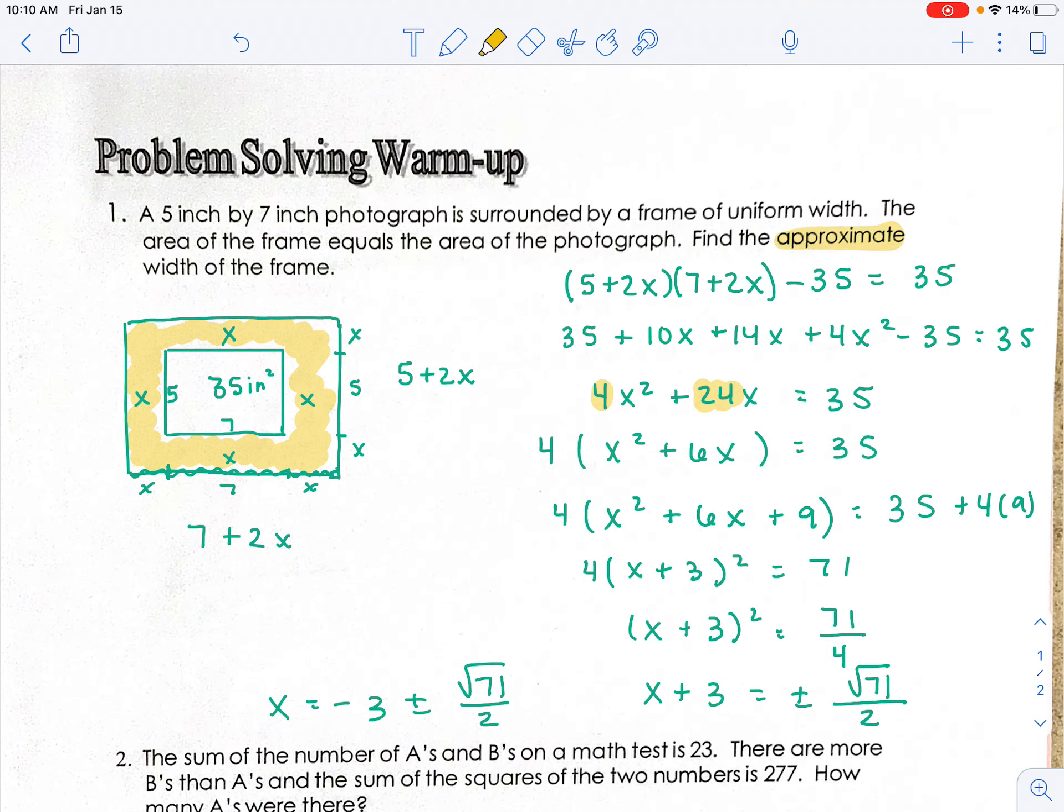So I get x equals -3 plus or minus the square root of 71 over 2. Now since this is a real-life problem, they want the approximate width. All right, which means we can use decimals. We've got two answers here, we've got the negative 3 plus and the negative 3 minus.